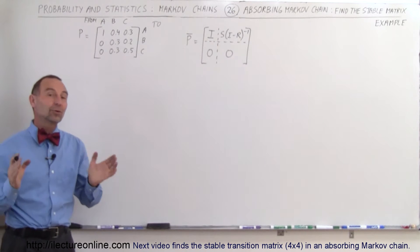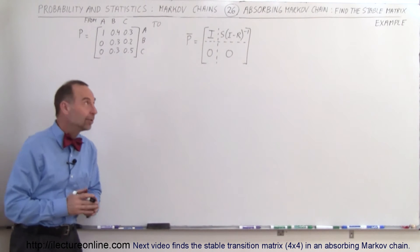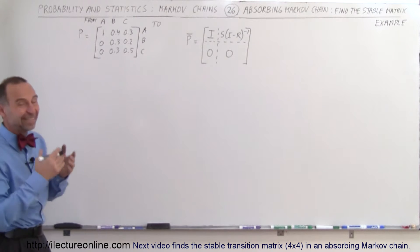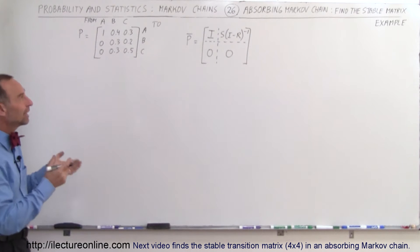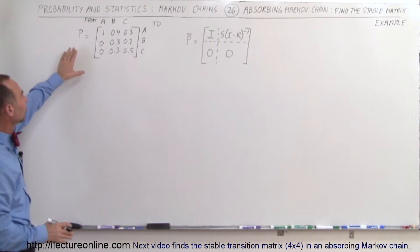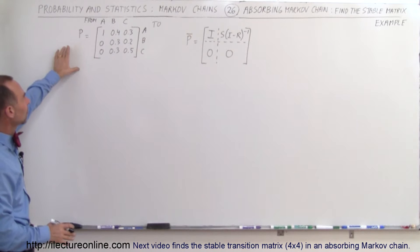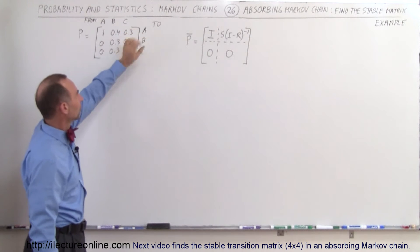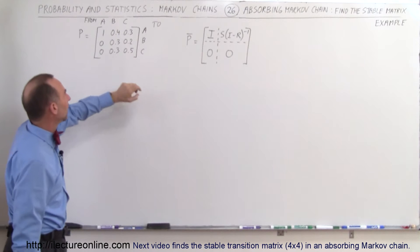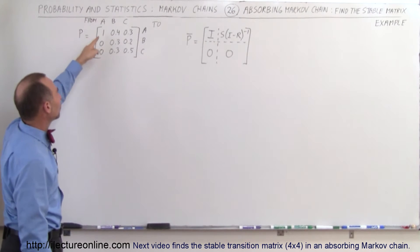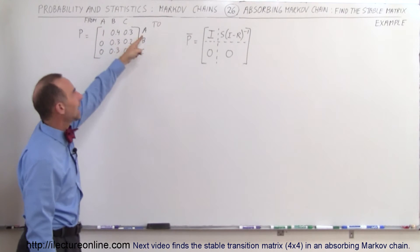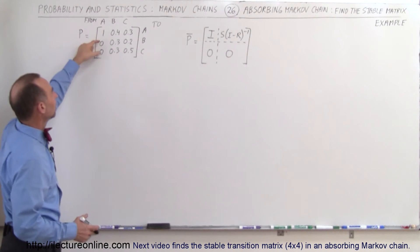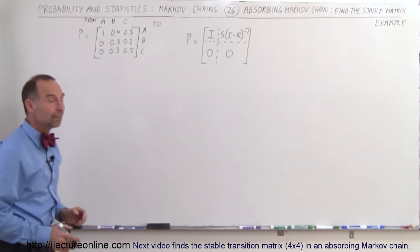Welcome to ElectronLine. We're going to do an example of how to calculate the stable transition matrix for an absorbing Markov chain. Here's the transition matrix we start with. We have states A, B, and C. Notice that for state A we have a one, so 100% of customers stay at A, while customers from B or C can move.